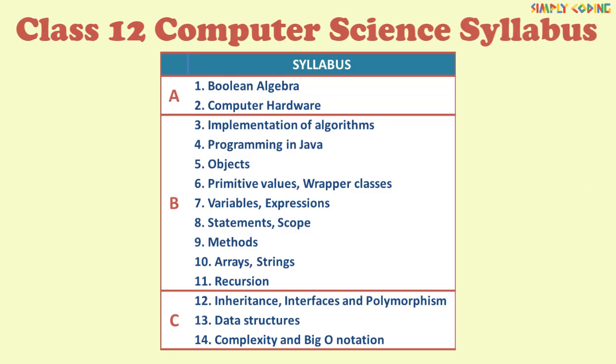Let's start with the syllabus. The syllabus for computer applications is divided into three sections: section A, B and C. Section A has two subsections: Boolean algebra and computer hardware. Section B has nine subsections all on Java as shown, and section C has three subsections on inheritance, interface and polymorphism, data structures, and complexity and big O notation.